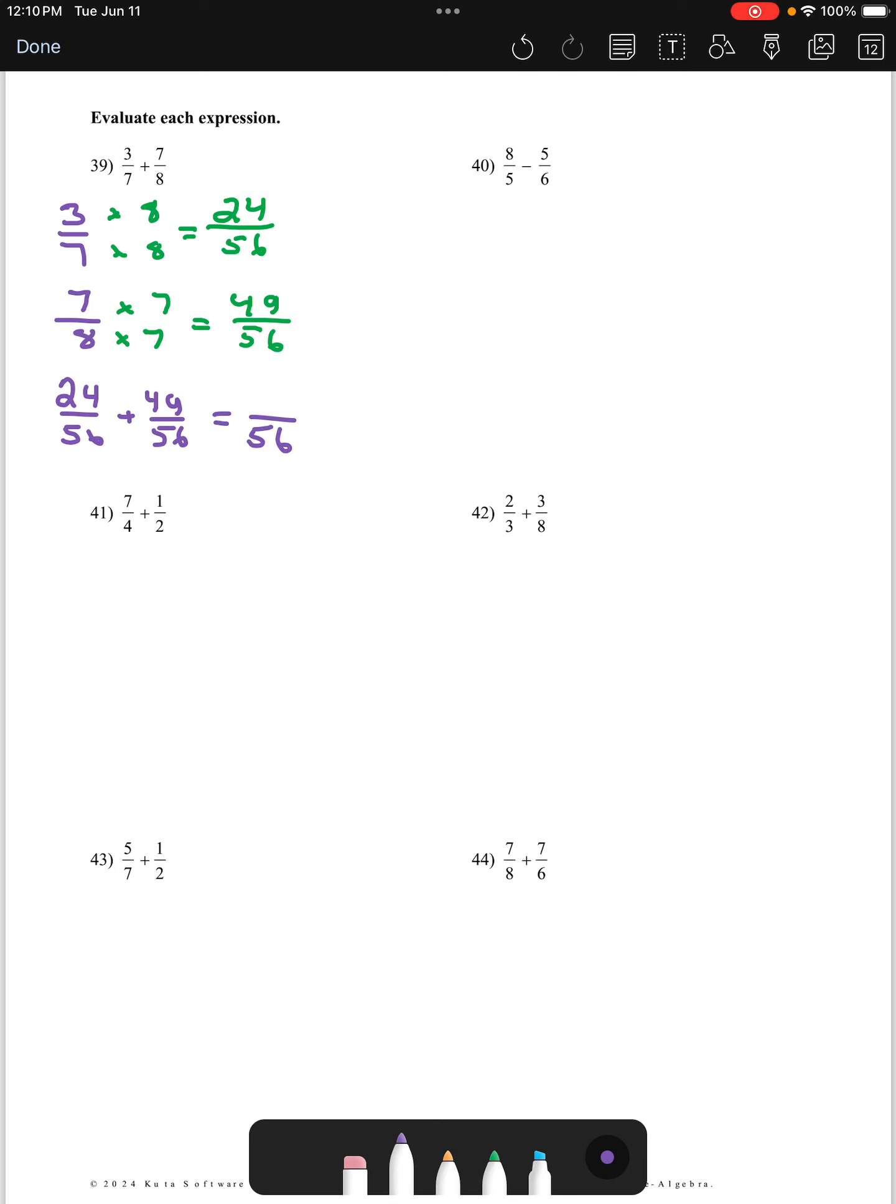Yes, we have to unsimplify. So really, we have 24/56 plus 49/56. We know we keep the 56, we add the numerators. So 24 plus 49. 49 plus 4 is 53, 53 plus 20 is 73. Finally, that is improper, so we do need to make an adjustment here. You can take a single 56 away from 73, and 56 is 17 less than 73. So 1 and 17/56.